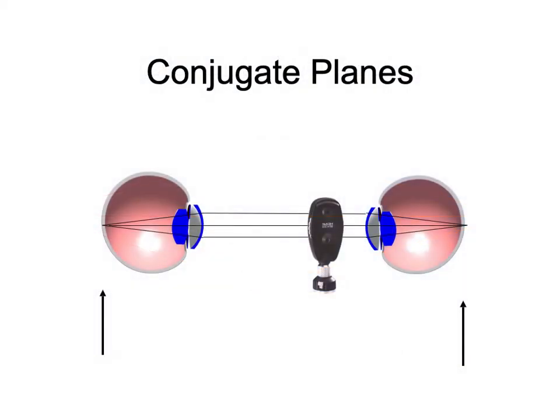These are the conjugate planes in a direct ophthalmoscope. Taking the case of an emetropic patient and an emetropic ophthalmologist, the vergence of rays of light between the two eyes is zero — they're parallel. All that the ophthalmoscope is doing is acting as a coaxial light source. The conjugate planes are the patient's retina and the observer's retina — that's the objective, to get a look at the patient's retina, so those planes have to be conjugate.